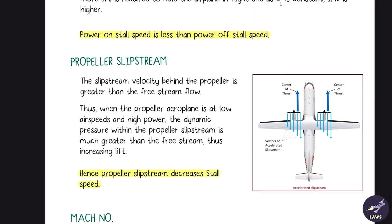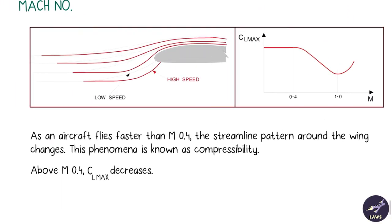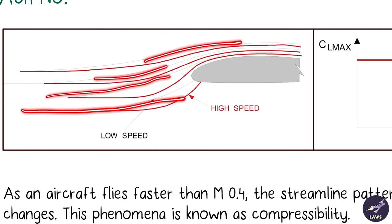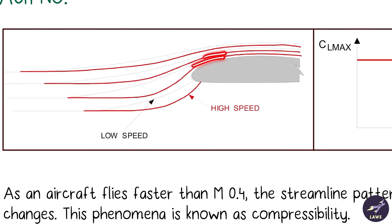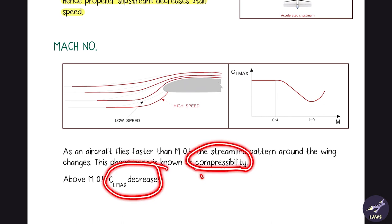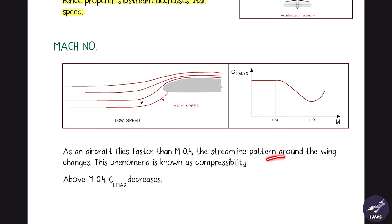Mach number: at lower speeds, streamlines are further apart, but as speed increases they come closer together, increasing compressibility. This happens when the aircraft flies faster than Mach 0.4. Compressibility reduces CL, so velocity must increase to maintain the same lift — meaning stall speed also increases.